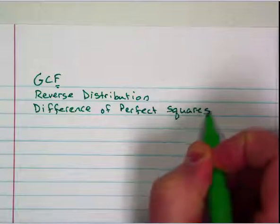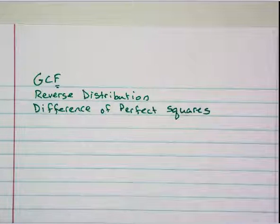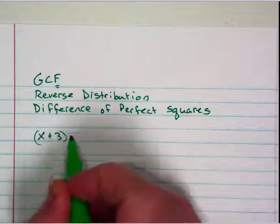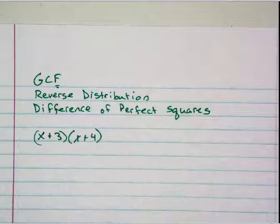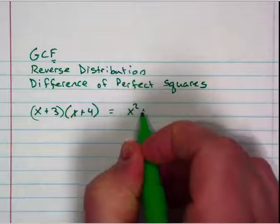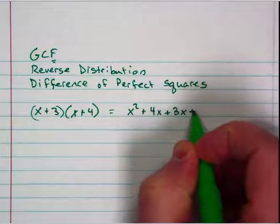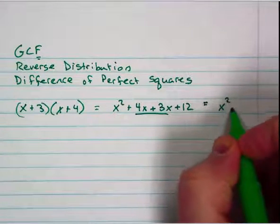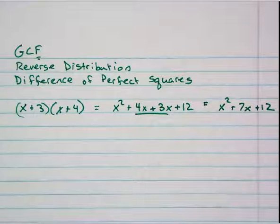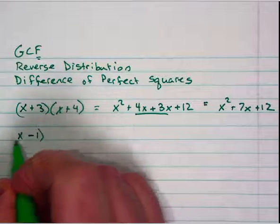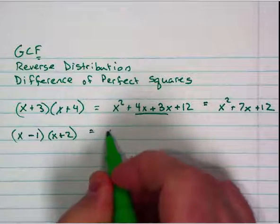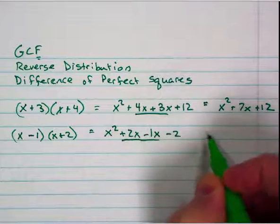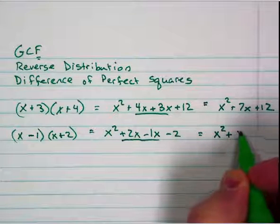Now you're going to learn the fourth one, but before we get to that, there are a couple of things I'd like to review. If I were to give you something like x plus 3 times x plus 4, we would do our double distribution and get x squared plus 4x plus 3x plus 12. These two middle terms go together, so we end up getting x squared plus 7x plus 12. Likewise, x minus 1 times x plus 2 gives x squared plus 2x minus 1x minus 2, which combines to x squared plus x minus 2.